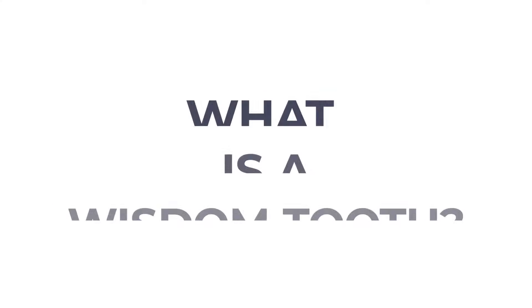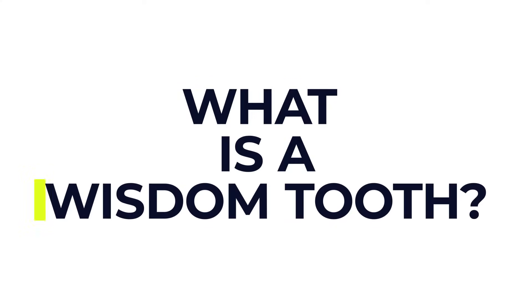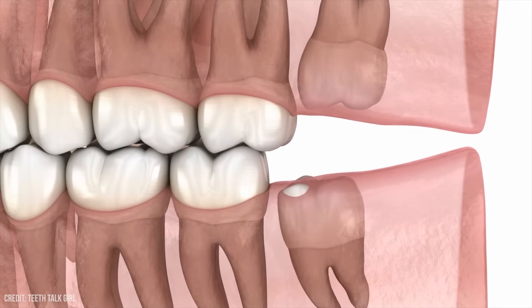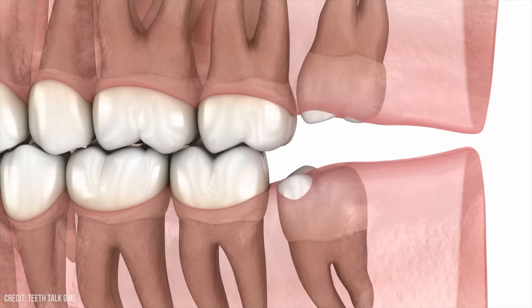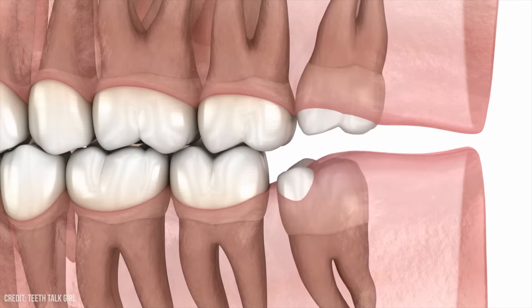In this video we're going to be covering why your wisdom tooth might need to be removed, what the procedure involves and what to do to help with your recovery. But first of all, what is a wisdom tooth? Wisdom teeth develop later than other teeth. They usually start coming through into your mouth in your teens or early 20s, but they can cause problems at any age.